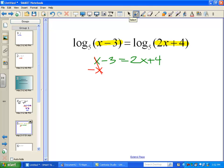So, we'll just go ahead and solve this. Subtract x, subtract x, and then subtract 4 as well from both sides. And I get x is equal to negative 7.